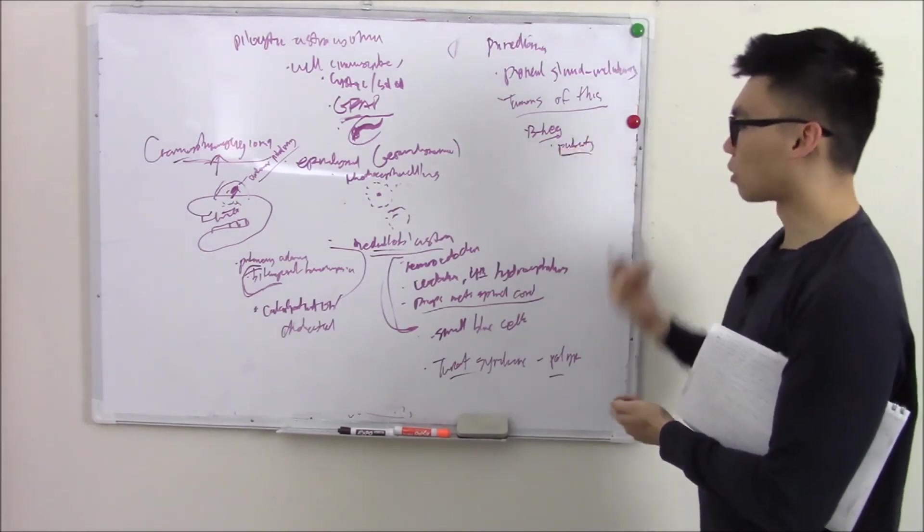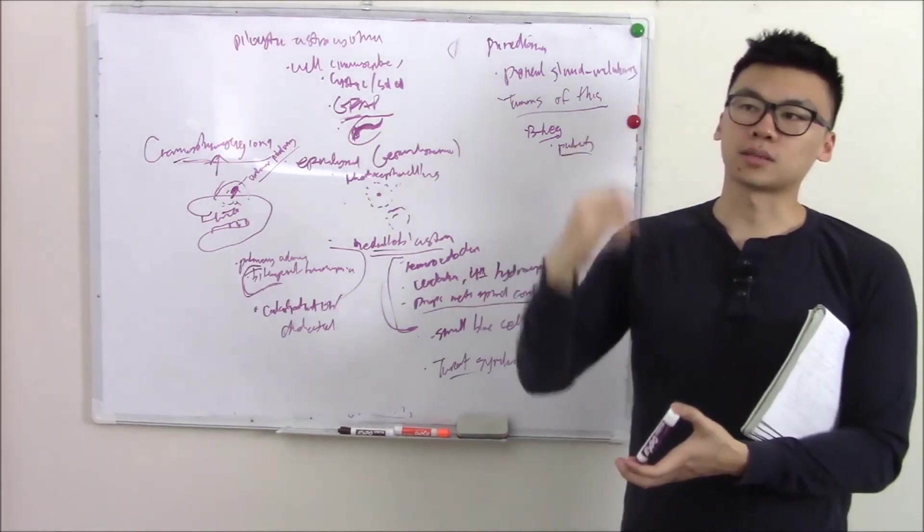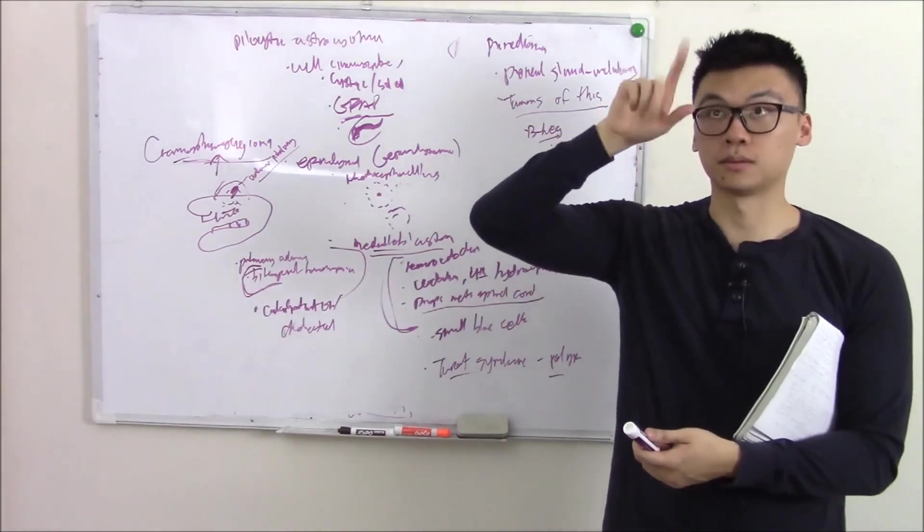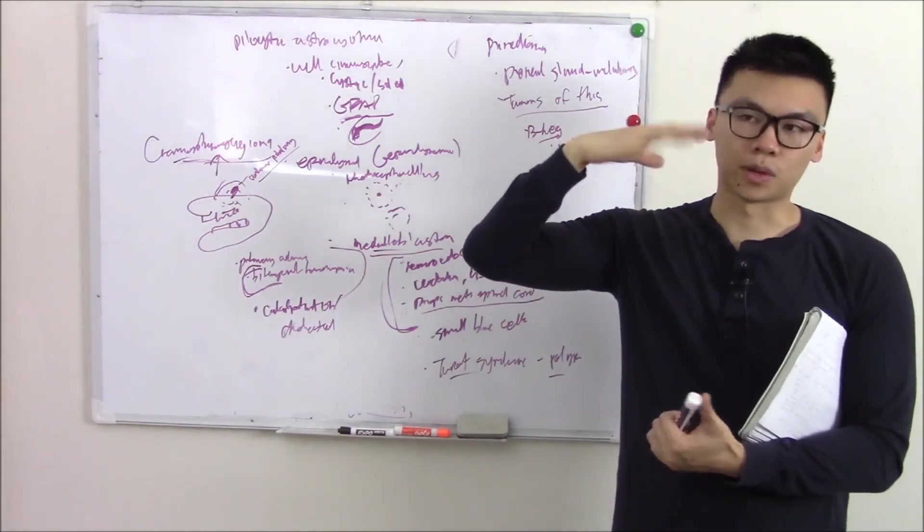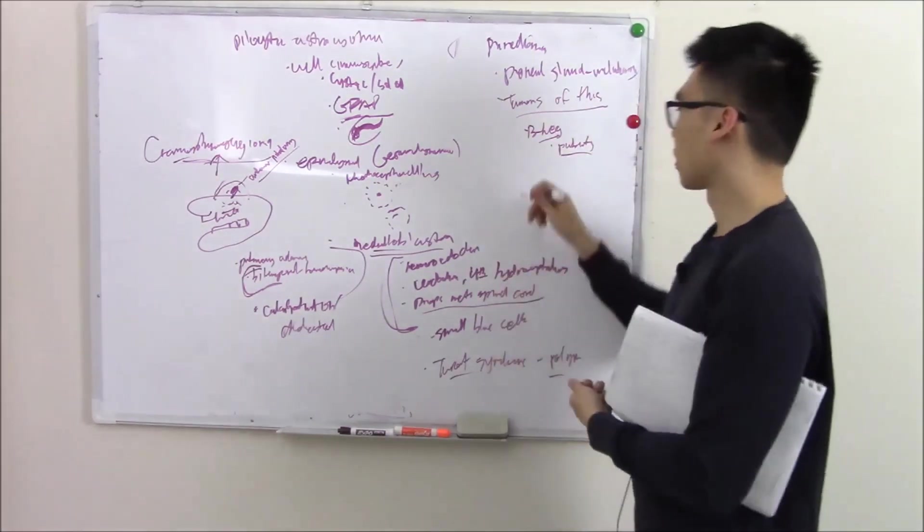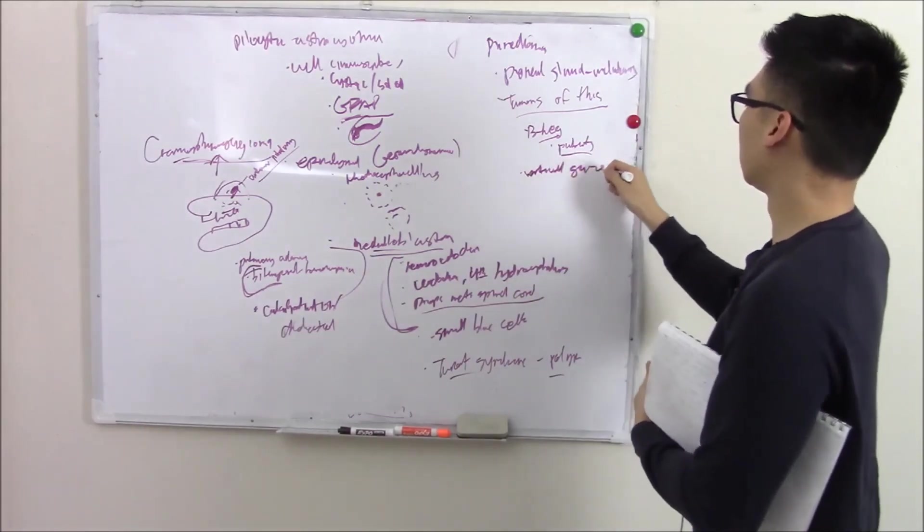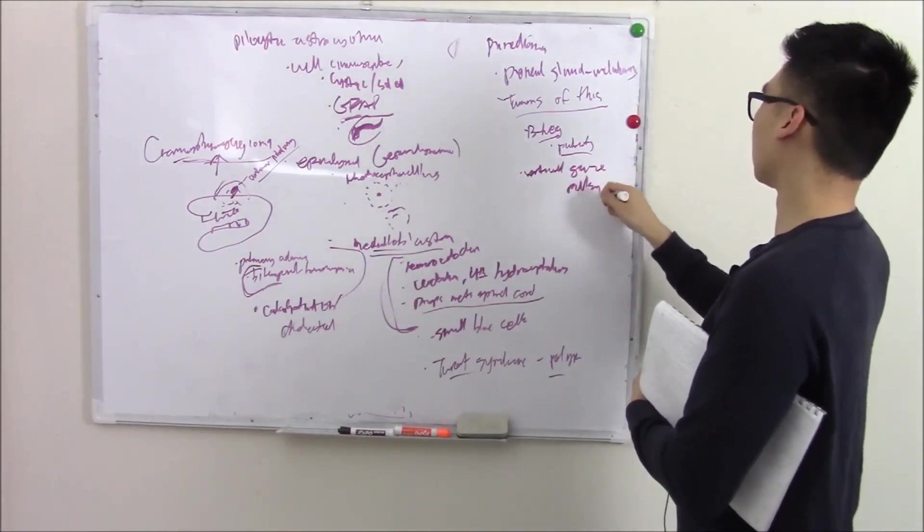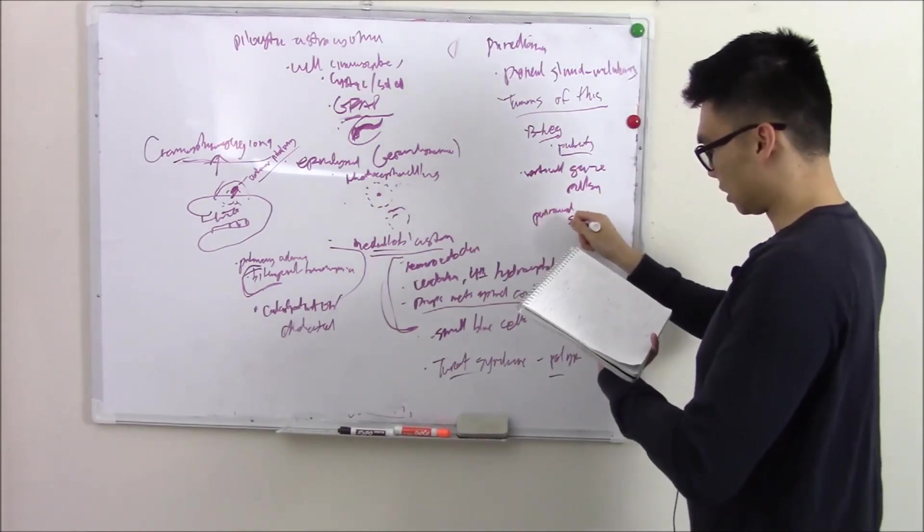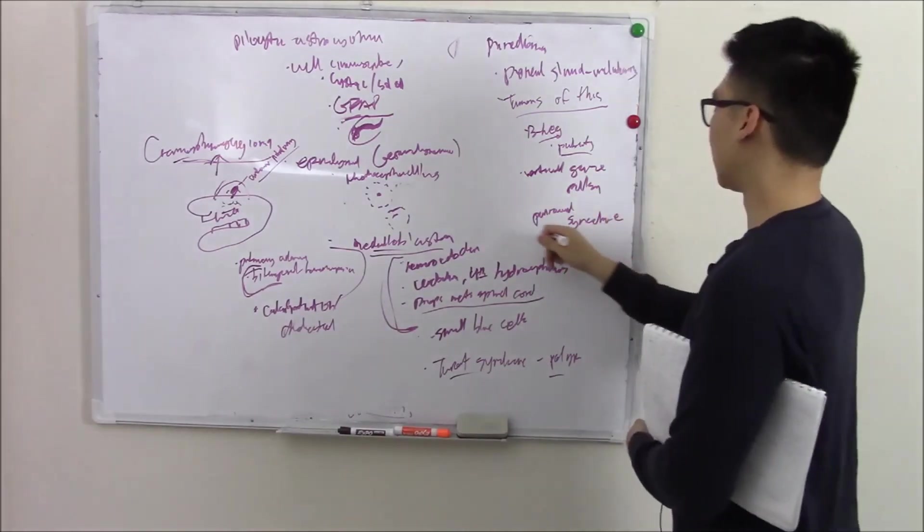And as that tumor grows, it can compress on things as masses do. It can compress on something called your vertical gaze center. Something that controls your eyes moving up. If you compress on that and knock it out, then your eyes can't move up. We call that vertical gaze palsy. So vertical gaze palsy. A fancy word for that is called Parinaud syndrome. Parinaud syndrome.